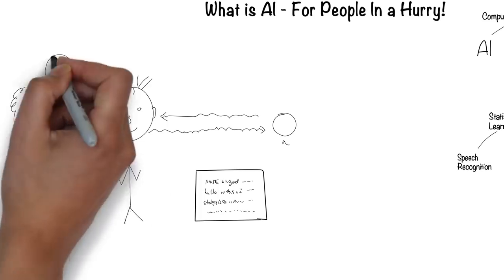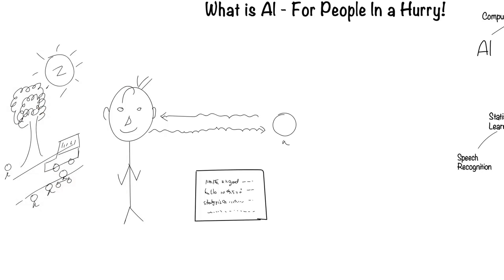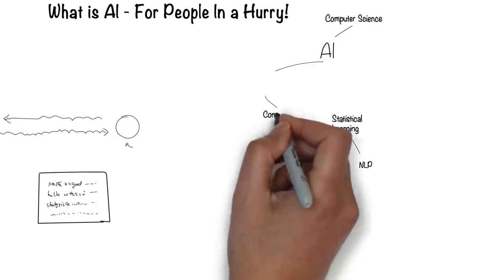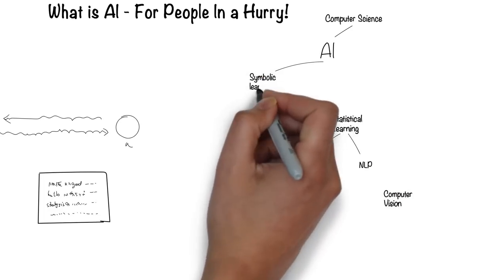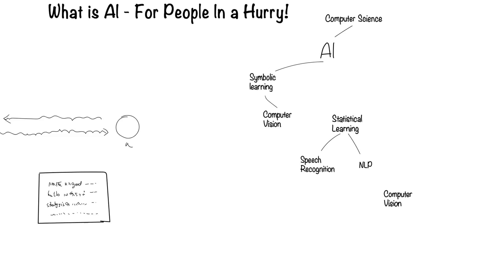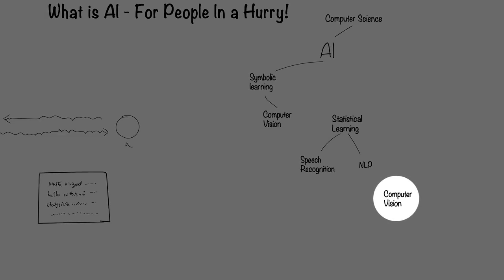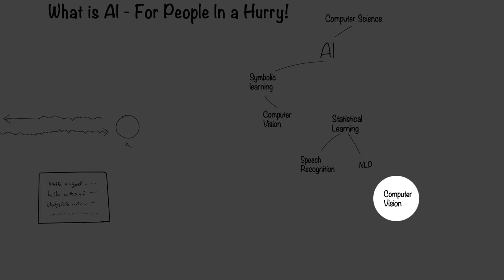Humans can see with their eyes and process what they see. This is the field of computer vision. Computer vision falls under the symbolic way for computers to process information. Recently, there's been another way, which I'll come to later.